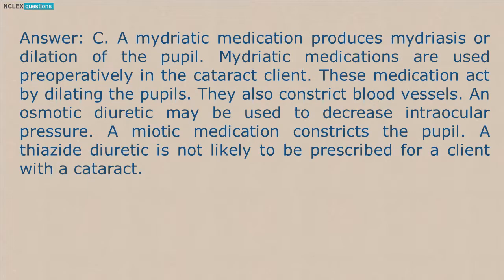Answer: C. A mydriatic medication produces mydriasis, or dilation of the pupil. Mydriatic medications are used preoperatively in the cataract client. These medications act by dilating the pupils and also constrict blood vessels. An osmotic diuretic may be used to decrease intraocular pressure. A miotic medication constricts the pupil. A thiazide diuretic is not likely to be prescribed for a client with a cataract.